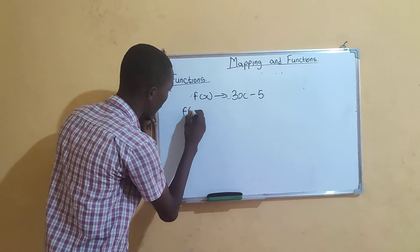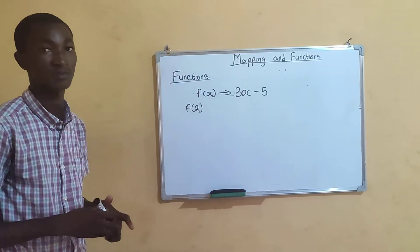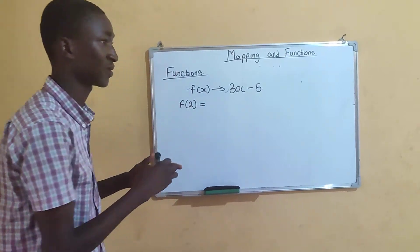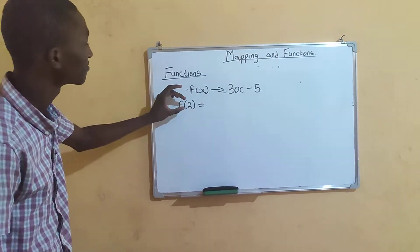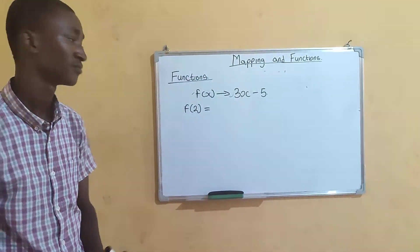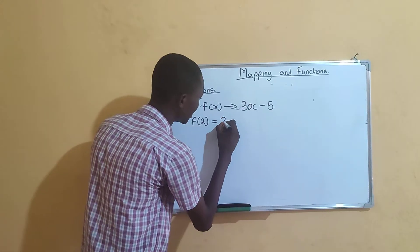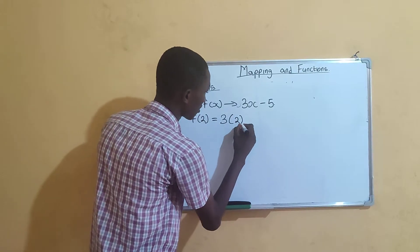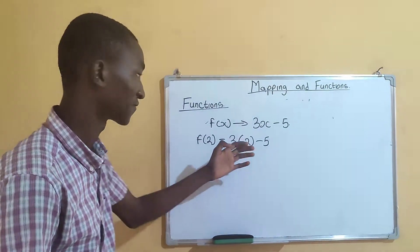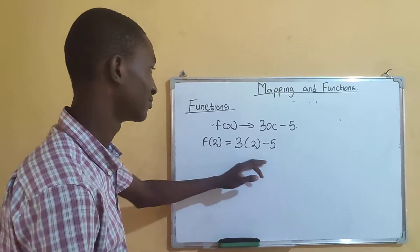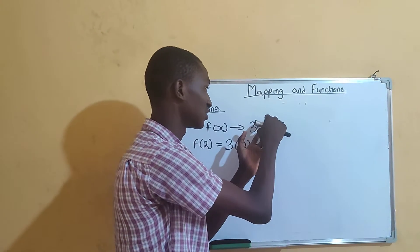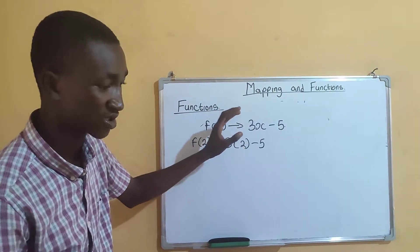The question might come as: find f(2). What they are asking you to do is input 2 wherever you see x in the equation. So this becomes 3 × 2 − 5. Everything remains the same — you just change wherever you find x to the particular number given.